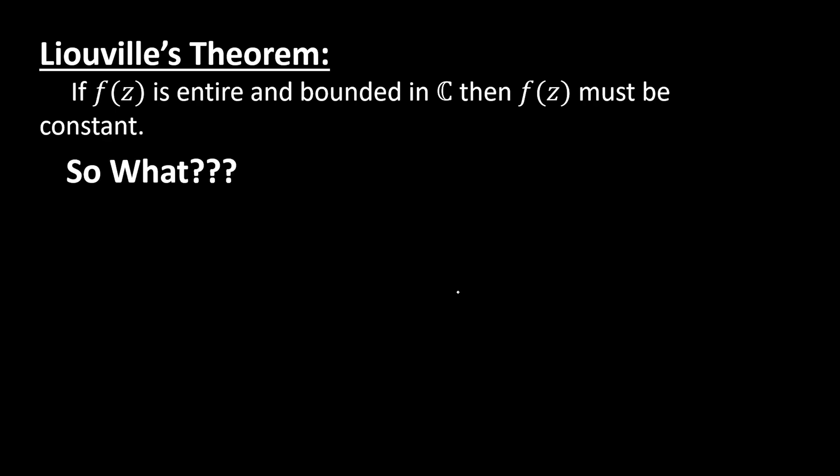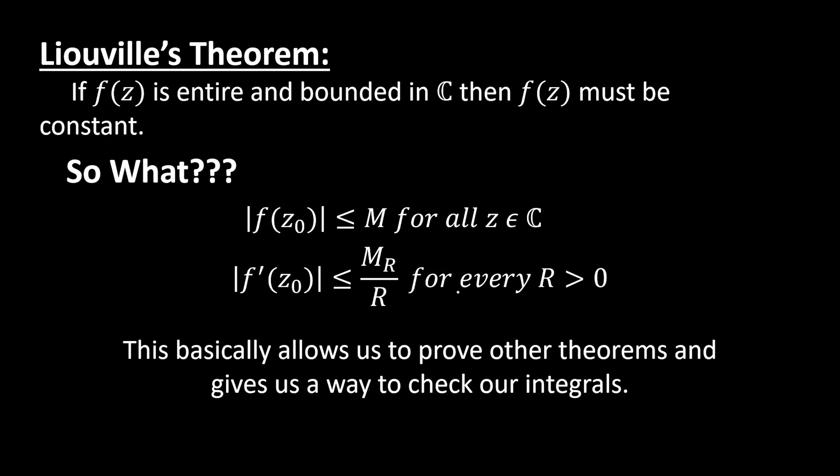And really, it gives us these two things. You can see I kind of said, so what? Well, it tells us that the modulus of our function evaluated at some z0 is less than or equal to M, which is just going to be a positive constant. And then the derivative is just this M_R per R. We could just change that to be M. But this is relatively straightforward.